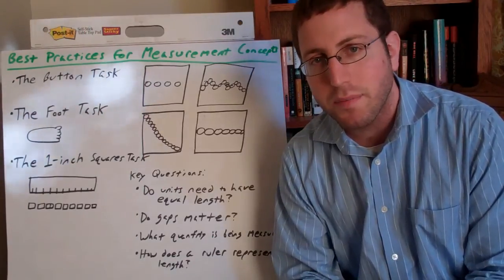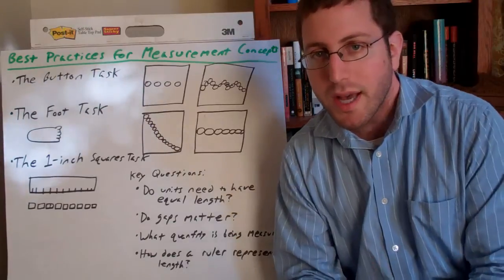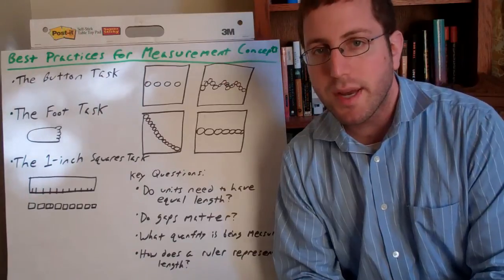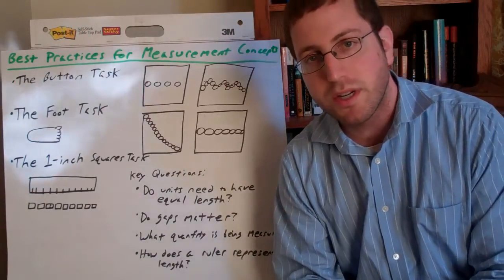And then pose the question to the students, why does that work? Why is it that when I have the ruler and when I use these one inch squares, I come up with the exact same measurement? And then ask students in pairs to start measuring sets of classroom objects, both with the rulers and with sets of one inch squares.